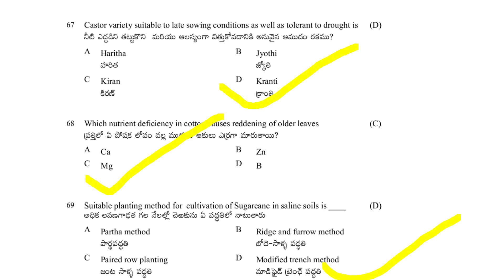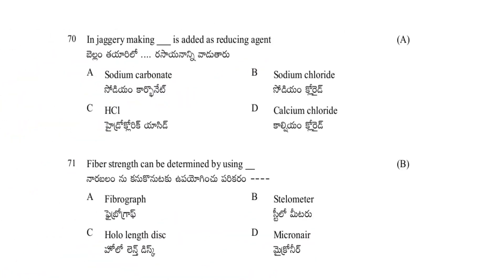In jaggery making, which substance is added as a reducing agent? Options: sodium carbonate, sodium chloride, hydrochloric acid, calcium chloride. The answer is sodium carbonate — it is used as a reducing agent in jaggery making.